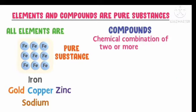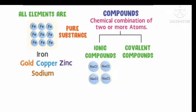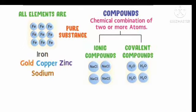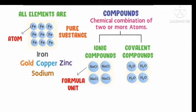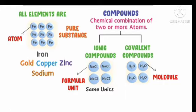Here we take gold, copper, zinc, sodium — these are all elements. A compound means a chemical combination of two or more elements — that is ionic compounds and covalent compounds. Ionic compounds: ions like Na+ and Cl−. Covalent compounds: H2O. Atoms are divided into two parts. Atom means a group of tiny particles; a group of atoms combination is called a molecule. Same type of atoms combination is called an element, and different type of atoms combination is called a compound.